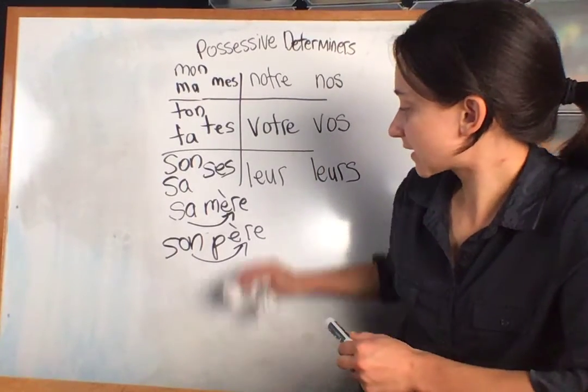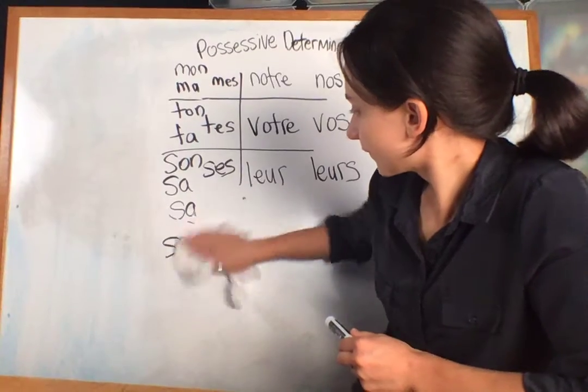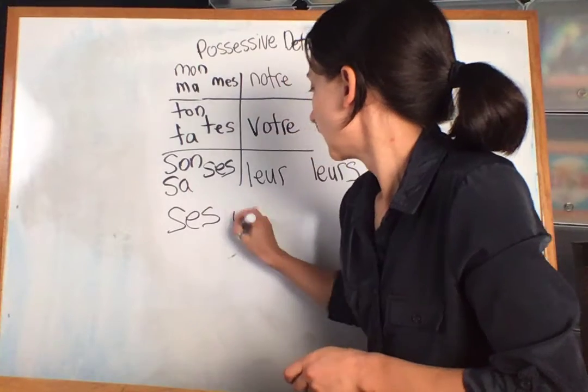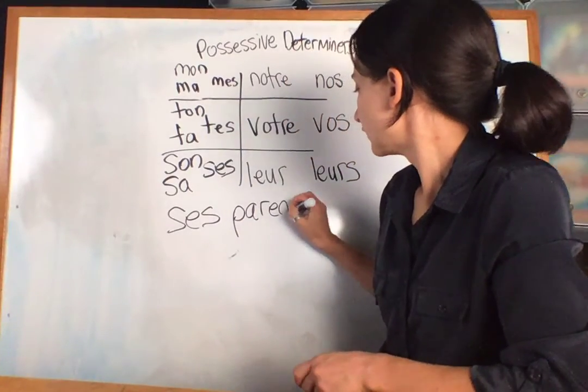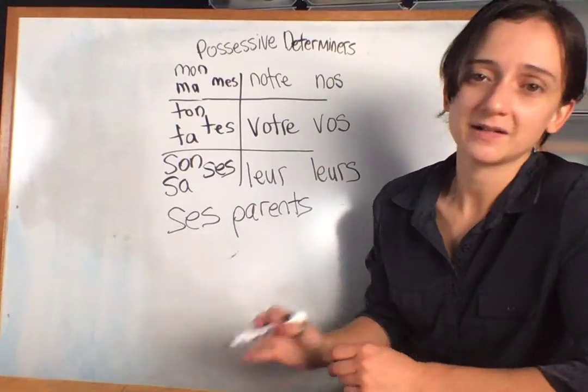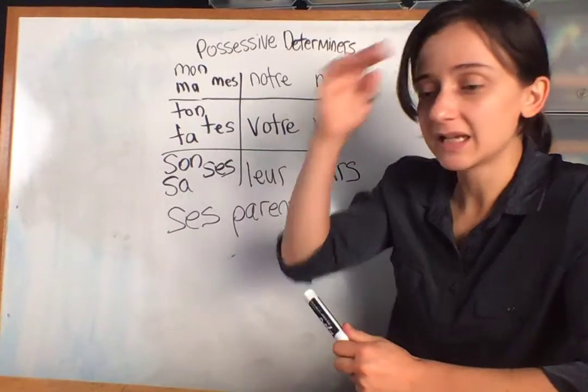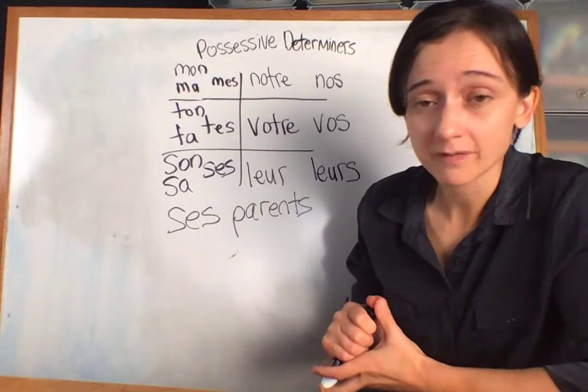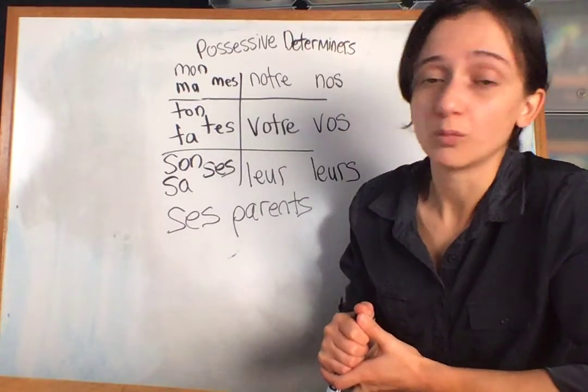His parents would be ses parents. That would also mean her parents. Everything in that box can mean his or her. And as long as you remember that, that will keep you safe from writing the incorrect word.